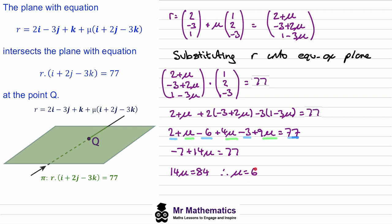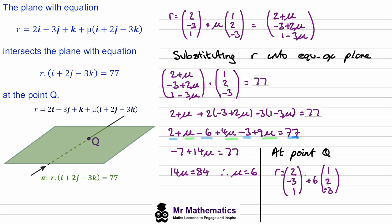Substituting μ = 6 into the equation of the line, at point Q our x-value is 2 plus 6, the y-value is negative 3 plus 12, and the z-value is 1 minus 18. This gives us coordinates 8, 9, and negative 17.